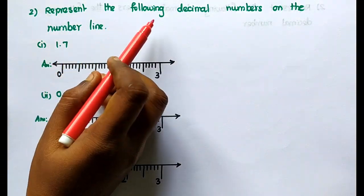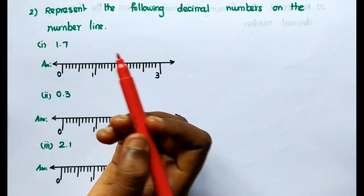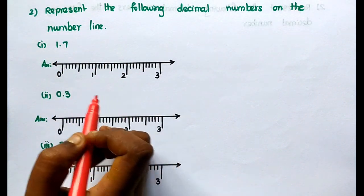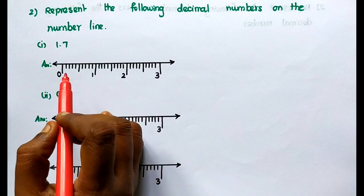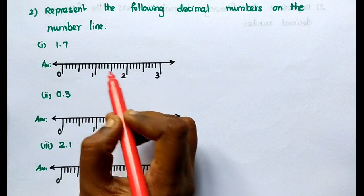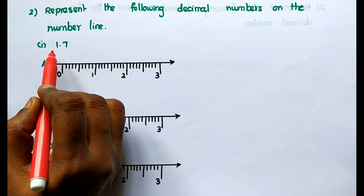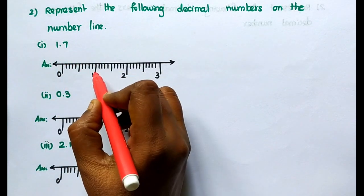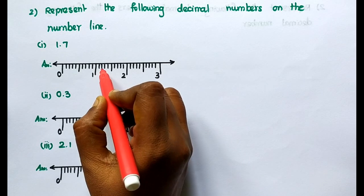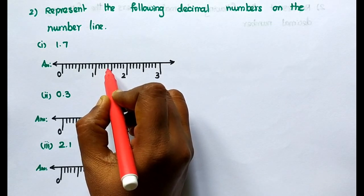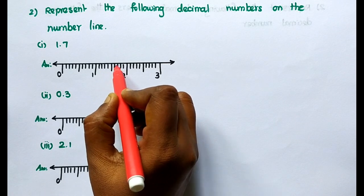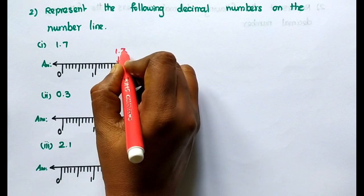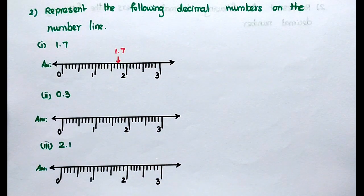Second sum: Represent the following decimal numbers on the number line. They give the decimal numbers and we have to point them out on the number line. First one: 1.7. It lies between 1 and 2 — first whole number 1, next whole number 2. In between, 1.7 is there: 1.1, 1.2, 1.3, 1.4, 1.5, 1.6, 1.7. So this is 1.7 here.